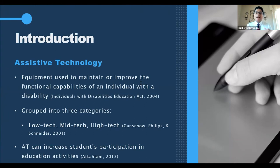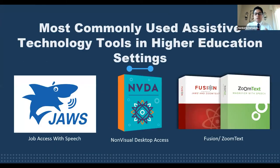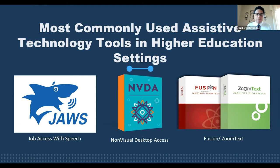Alcani argues that assistive technology is the difference between experiencing success or failure in educational settings for students with disabilities, and it can increase students' participation in educational activities. Here is a quick list of the most commonly used AT tools in higher education: JAWS — Job Access With Speech — is a screen reader perfect for students with ADHD as it highlights word-by-word or sentence-by-sentence as it reads, and is also natively used by individuals who are low vision or totally blind. NVDA — Non-Visual Desktop Access — is also a screen reader; it is free and open source. We also have Fusion and ZoomText, which are screen magnifiers and readers combined.